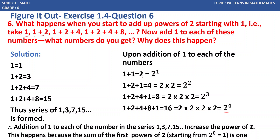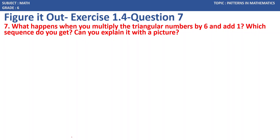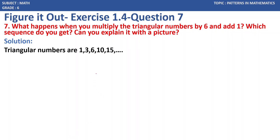Now Question 7: What happens when you multiply the triangular numbers by 6 and add 1? Which sequence do you get? Can you explain it with a picture? Triangular numbers are 1, 3, 6, 10, 15. We call them triangular numbers because they can be represented in the form of a triangle. This is 1, this is 3, this is 6, similarly 10.